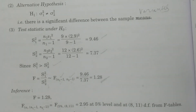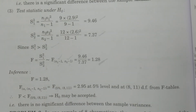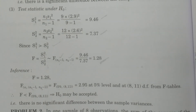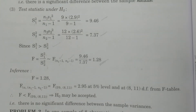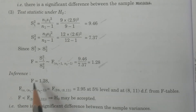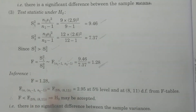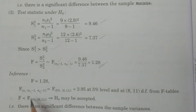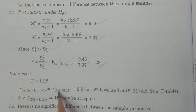Next, the fourth point is compare and conclusion. The calculated value F is equal to 1.28. The tabulated value is F alpha with N1 minus 1 and N2 minus 1 degrees of freedom. Alpha means level of significance, which is 5 percent level.